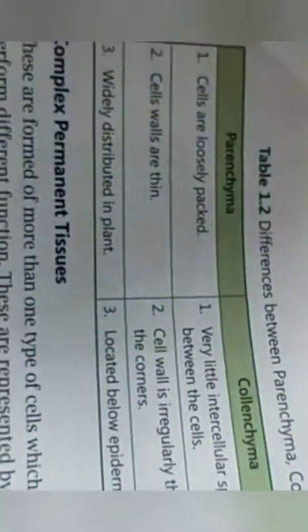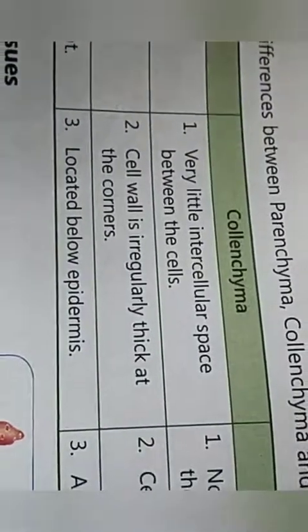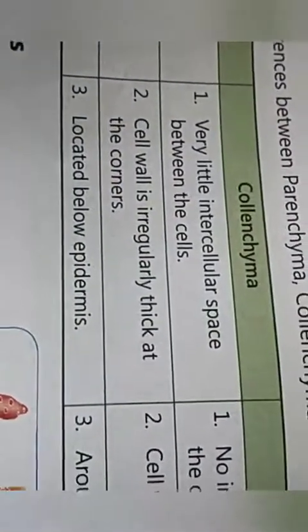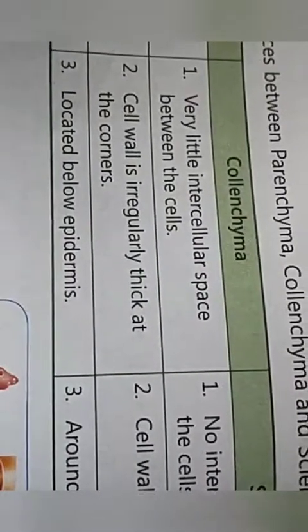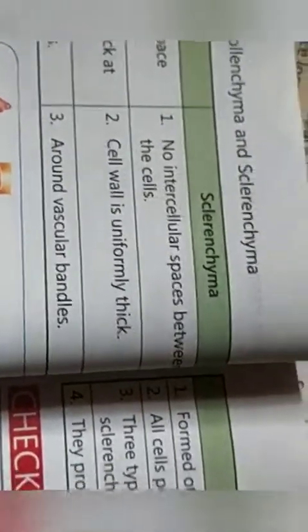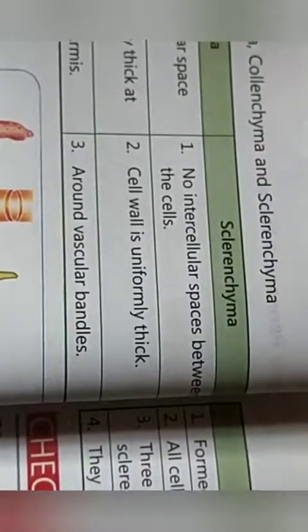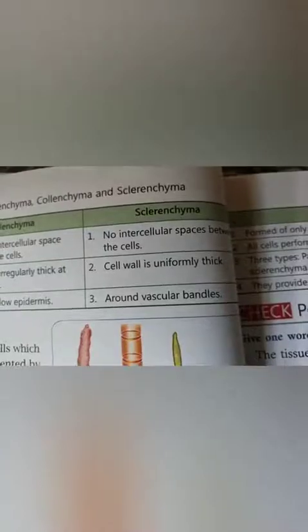Here are the differences between parenchyma, colenchyma, and sclerenchyma. In parenchyma, cells are loosely packed, the cell wall is thin, and they are widely distributed in plants. In colenchyma, there is very little intercellular space, the cell wall is irregularly thick at the corners, and it is located below the epidermis. In sclerenchyma, there are no intercellular spaces, the cell wall is uniformly thick, and they are found around vascular bundles.